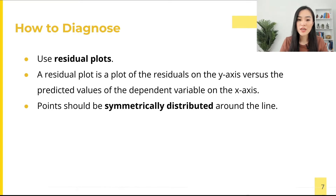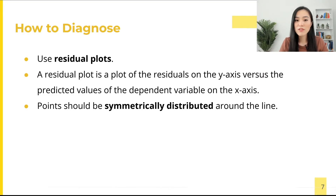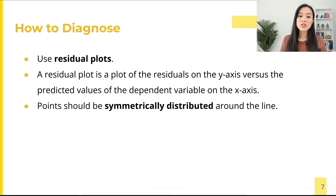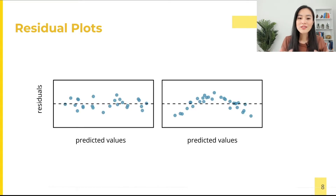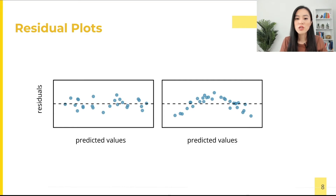One common way to spot non-linearity between x and y and verify if this assumption has been met is to use residual plots. A residual plot is a plot of the residuals on the y-axis versus the predicted values of the dependent variable on the x-axis. The points should be symmetrically distributed around the horizontal line with roughly constant variance.